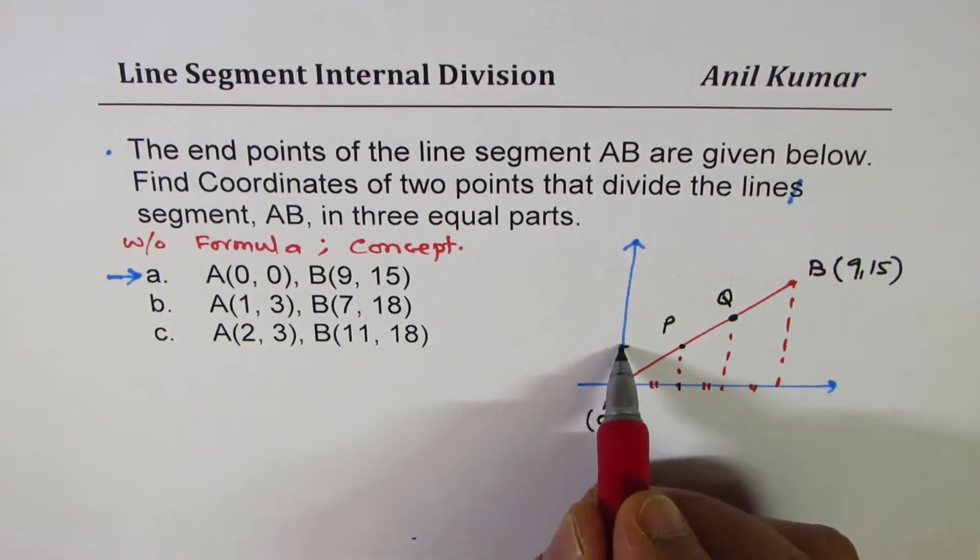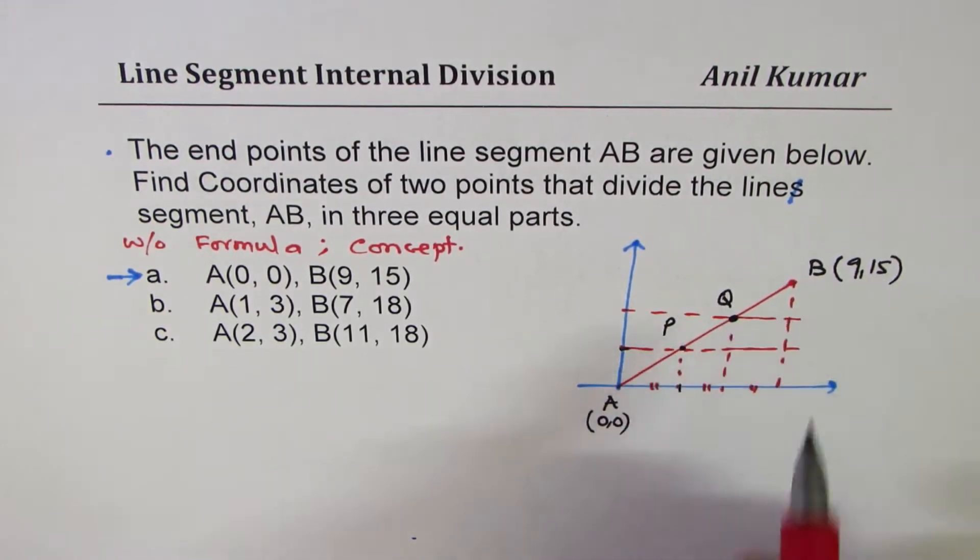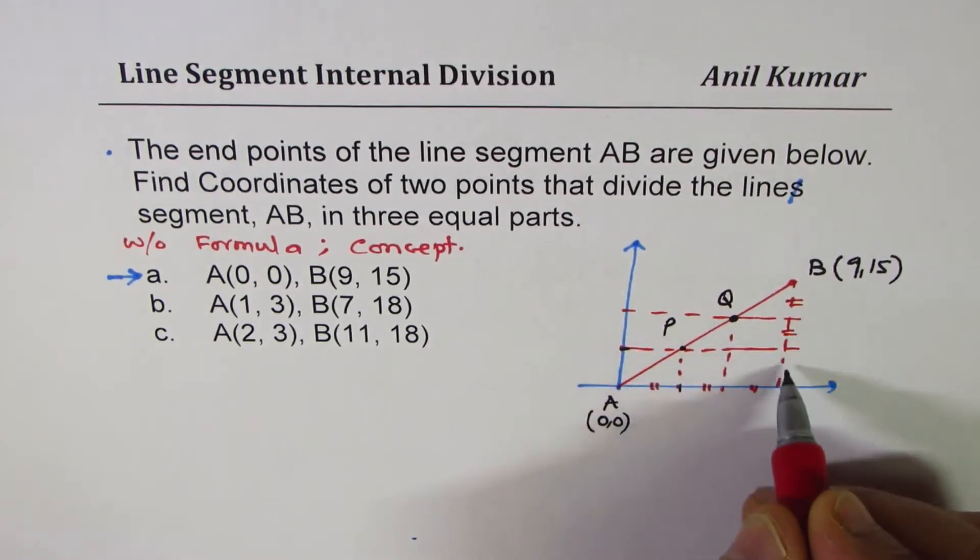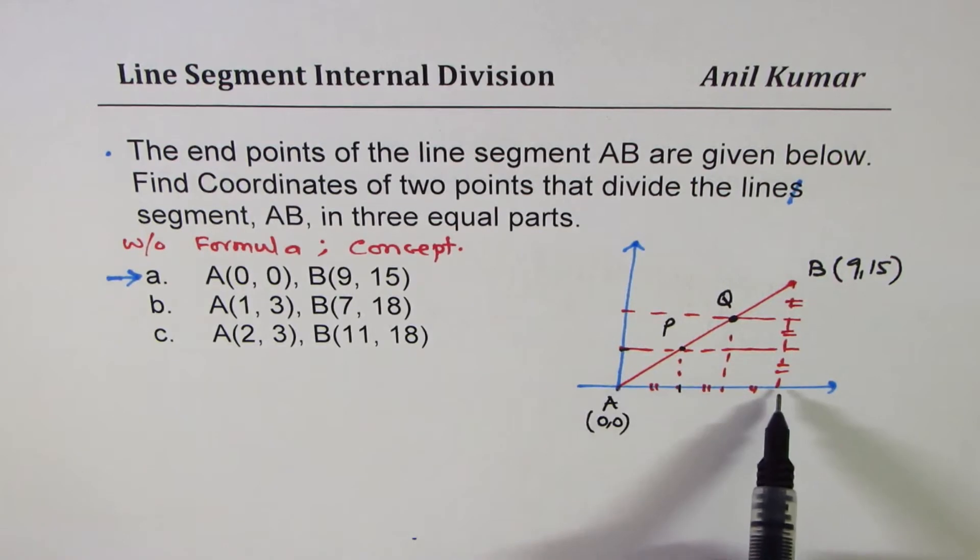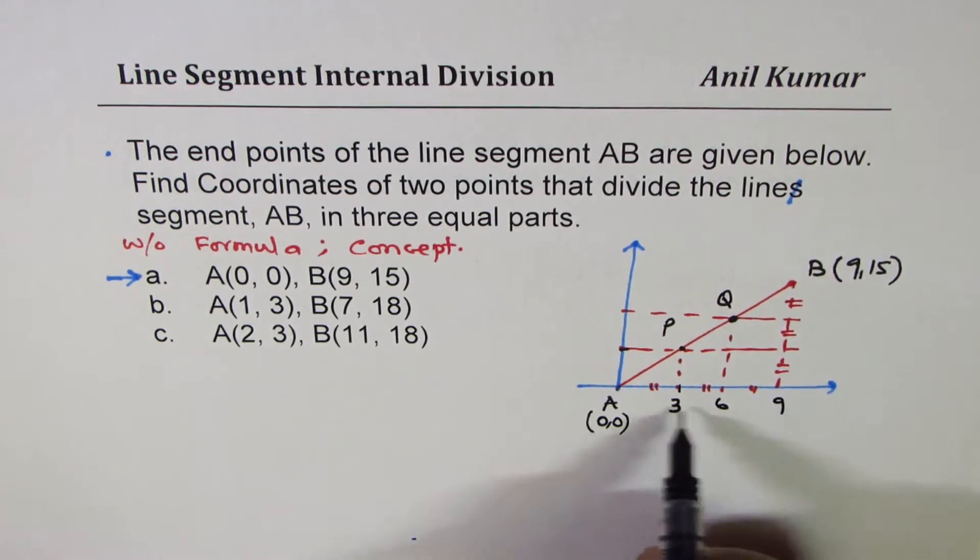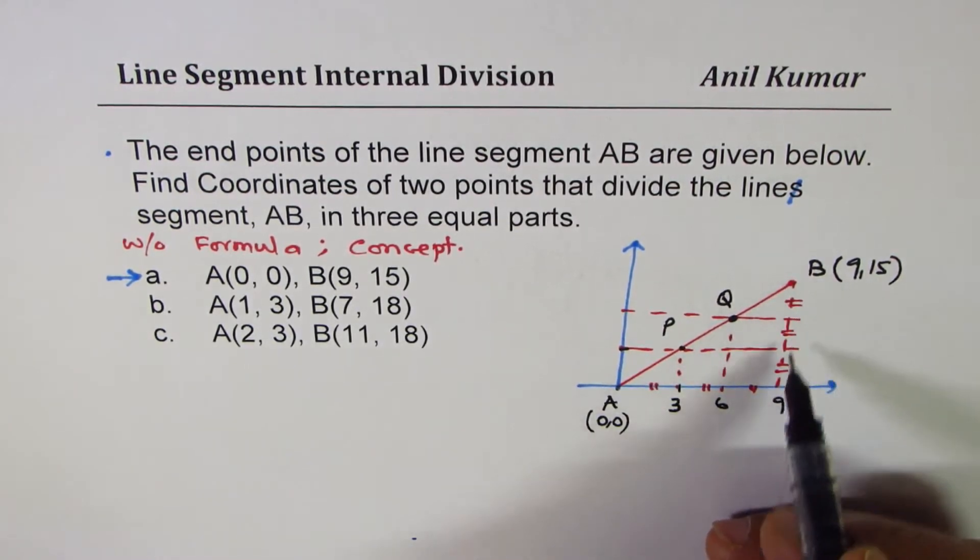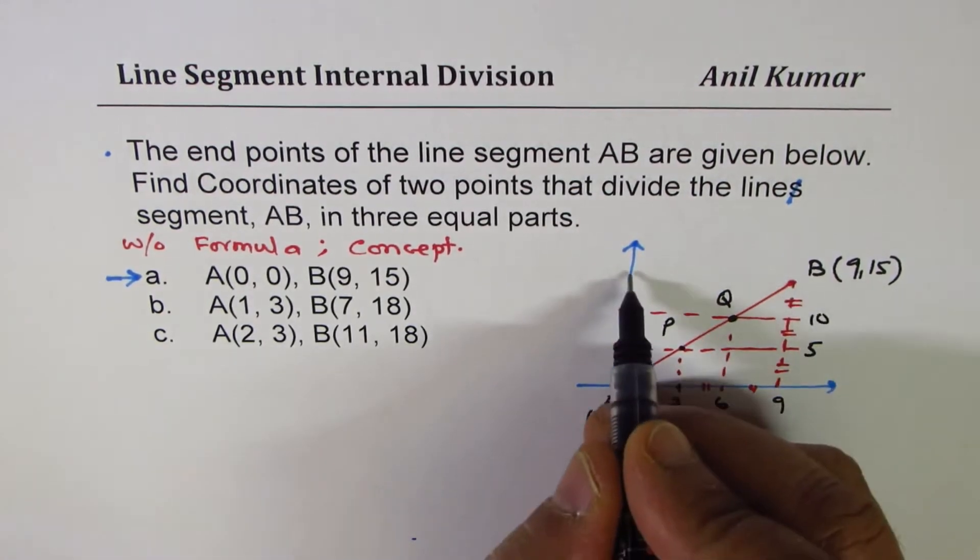And vertically, we have the situation where these parts are also equal. Logically, what can you see? Clearly, total length from here to here along the x-axis is 9. Each is 3. 3, 6 and 9. Three equal parts. The y values, we want to go up to 15. So, it could be 5, 10 and 15.